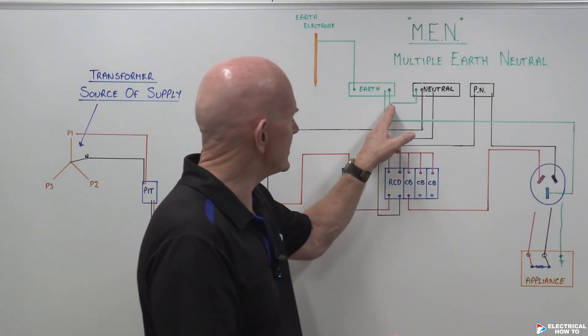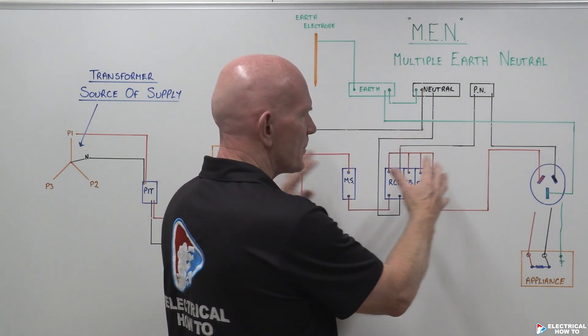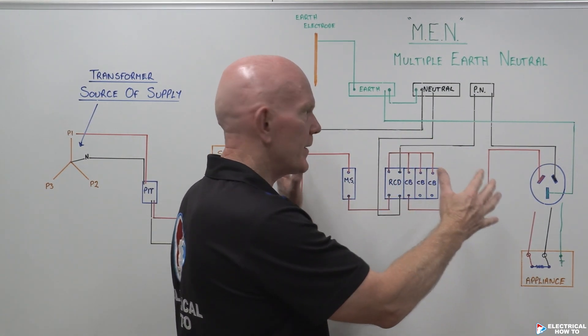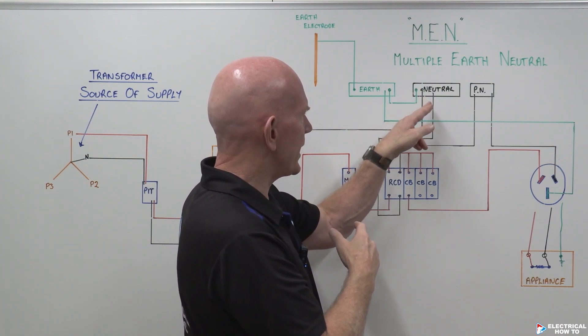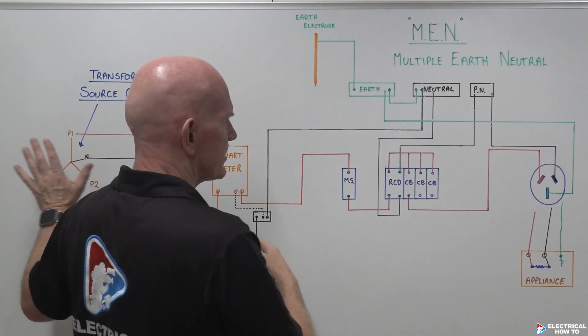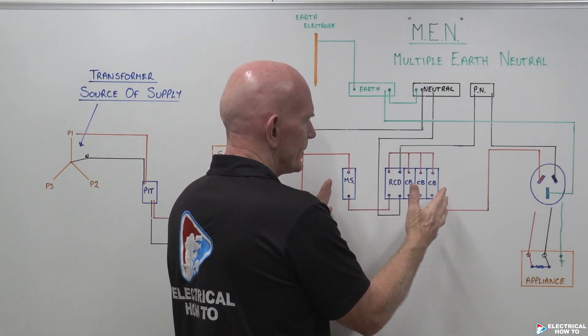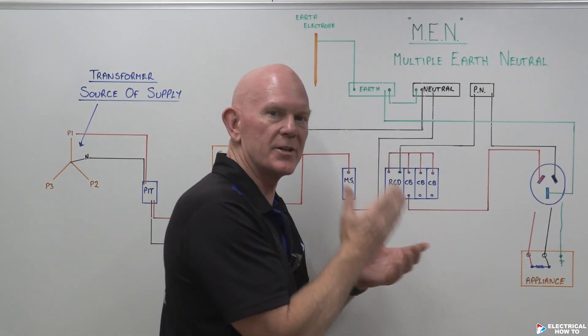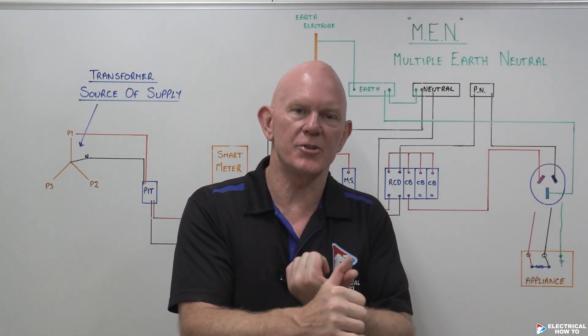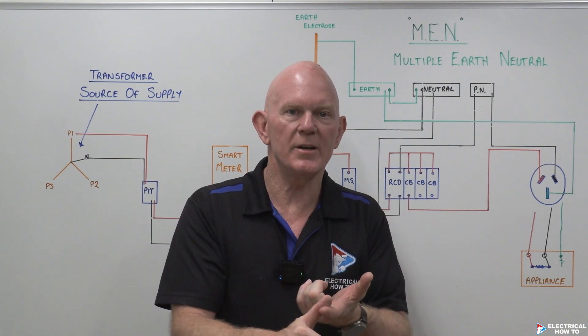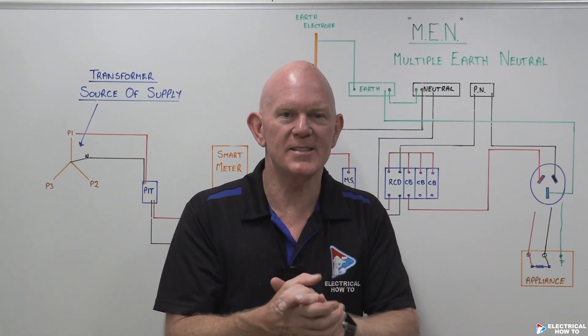So the whole reason of that MEN link is to get all our fault current of all our protective earths right throughout the installation back via that MEN link into that neutral cable, back to our source of supply, so that our automatic disconnection of supply, the safety switches or our circuit breakers, can trip off. One, for the prevention of electrocution, and also the prevention of fire. Hopefully that makes sense.